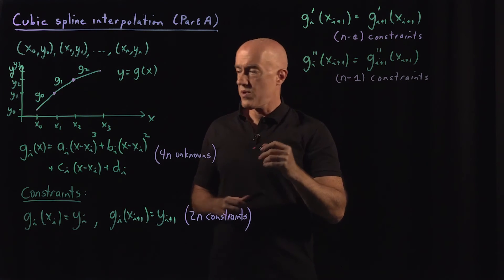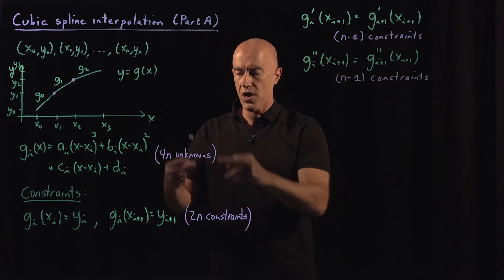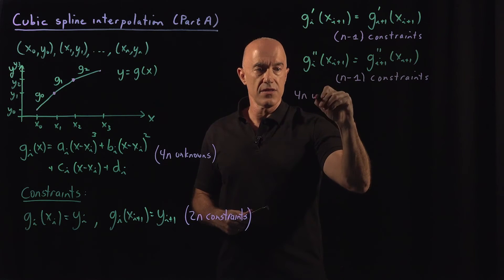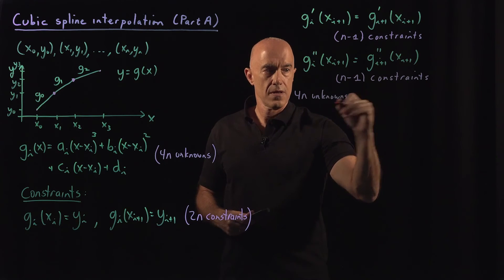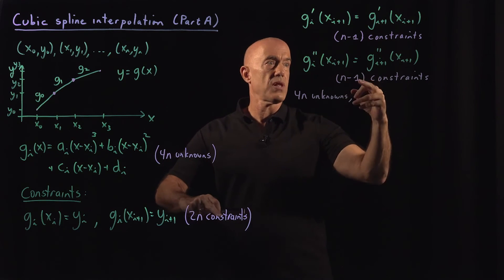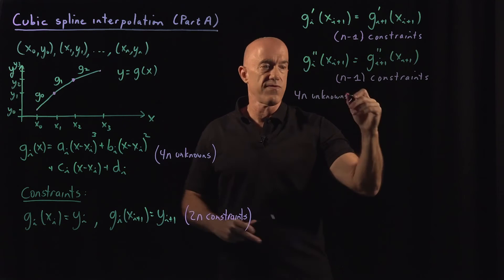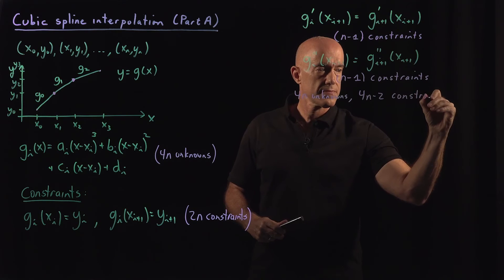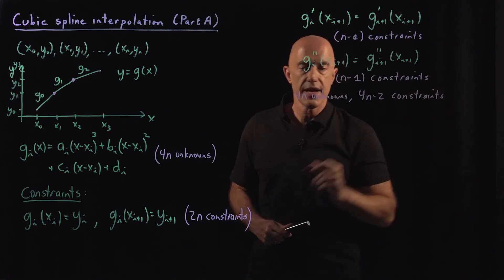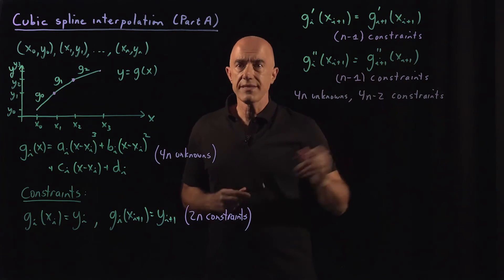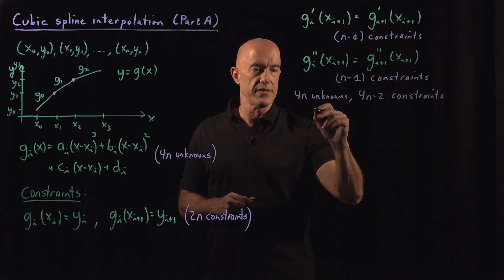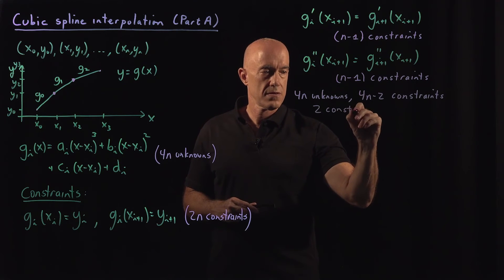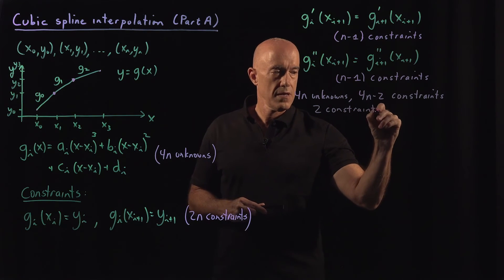We can do another derivative to make this thing smooth. So we can have the second derivative of g_i at x_(i+1) equal to the second derivative of g_(i+1) at x_(i+1), and this gives us another n minus 1 constraints. So we can count: we have 4n unknowns, and 2n plus 2 times (n minus 1), which is 4n minus 2 constraints. We're missing 2 constraints — we need 2 more extra constraints.